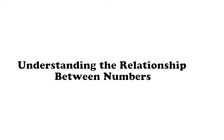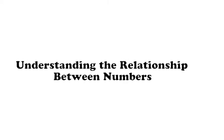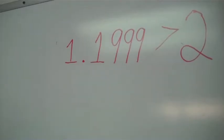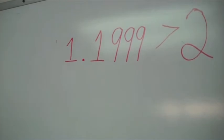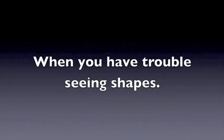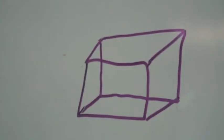Understanding the relationship between numbers. This student knows that this number is bigger because it has more numbers. Spatial skills is when you have trouble seeing shapes. This is a 3D shape, but some people only see squares.